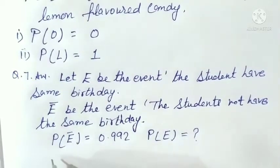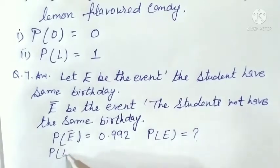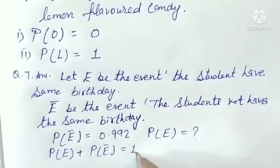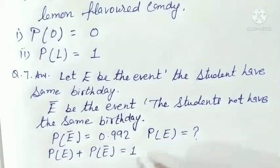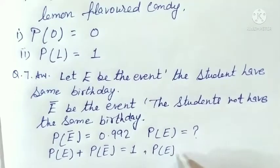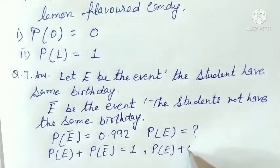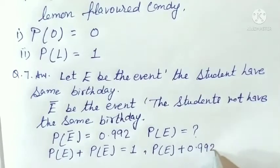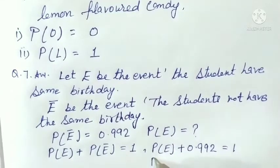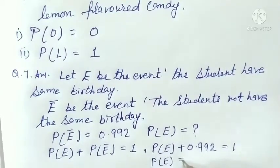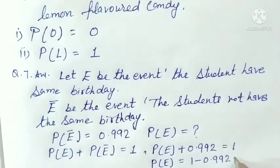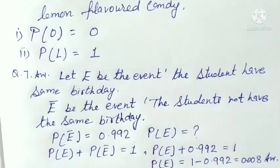تو پیچھے ہم نے پڑھا تھا — we know that P(E) + P(complement of E) = 1۔ تو یہاں پر value رکھیں گے: P(E) + 0.992 = 1۔ یہاں سے ہمارے پاس P(E) = 1 − 0.992، اور یہ آ جائے گا 0.008۔